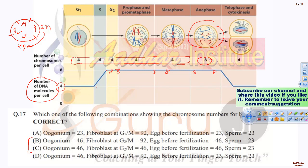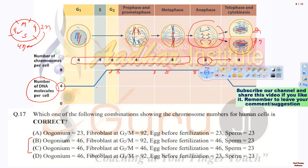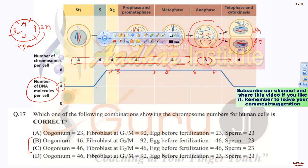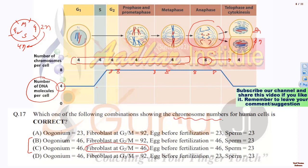Up to metaphase the chromosome number remains the same because centromeres have not split. In anaphase the chromatids split and the chromosome number doubles. After cytokinesis, each daughter cell returns to the original count. Remember: N refers to DNA content, not chromosome number. So for a fibroblast, which is a somatic cell, during G2 to M phase the chromosome number remains 46.